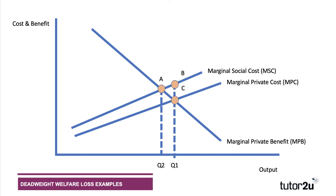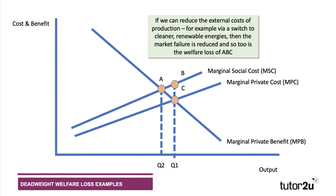However, it might be the case that you manage to reduce the externalities — an obvious example would be a switch to significantly cleaner renewable energies, or a firm becoming more dynamically efficient in their production, creating less pollution and fewer externalities. If we can lower the external cost of production, for example via a switch to cleaner renewable energies, then the market failure is reduced, the gap between marginal social cost and private cost is reduced, and hence the welfare loss area ABC is lowered.